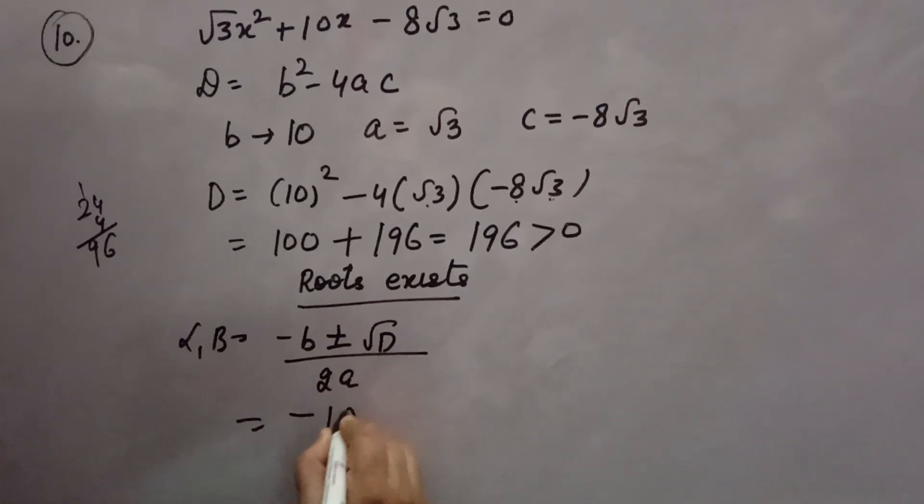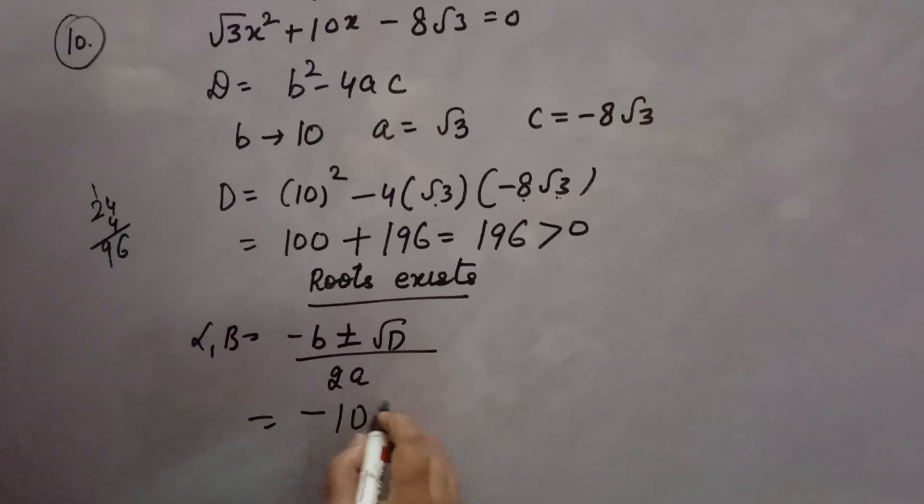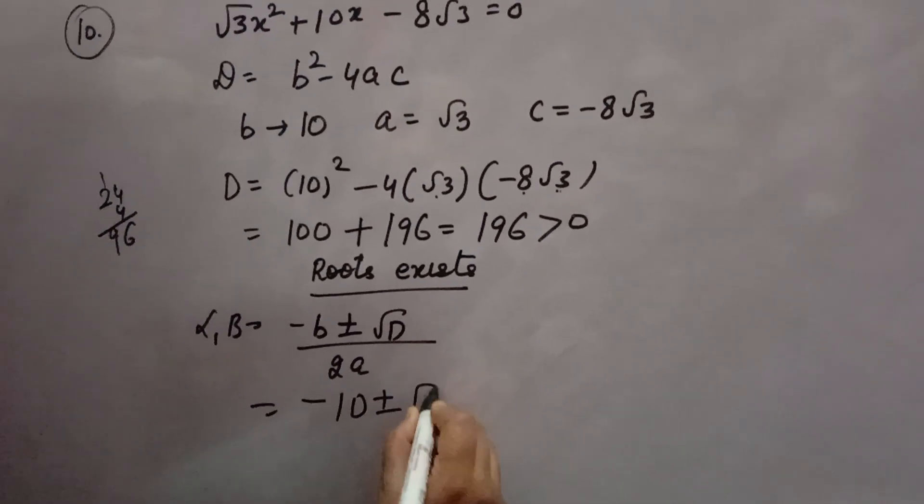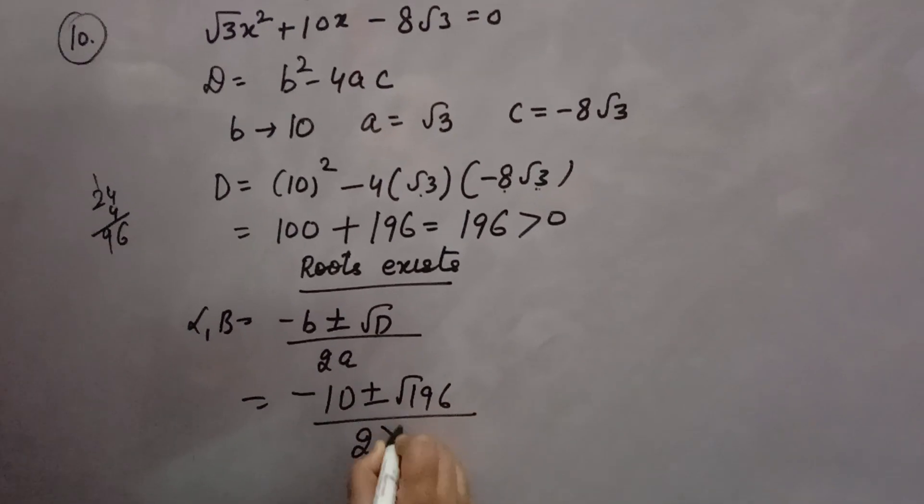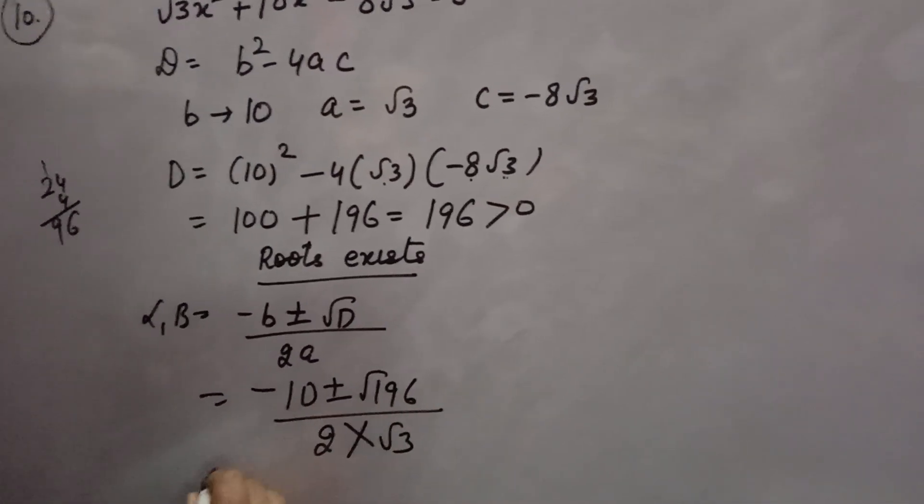Now, what is minus b? b is 10 and minus is already there. So, minus 10 plus minus under root of 196 over 2 into a. a is root 3.